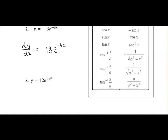Here's a further example: y equal to 12E to the power of 2x cubed. So again, finding dy/dx — we differentiate the power, which is 2x cubed. When we differentiate that, we get 6x squared. So 6x squared multiplied by 12 gives us 72x squared times E to the power of 2x cubed.